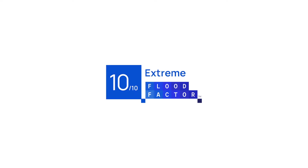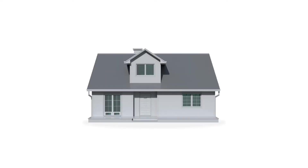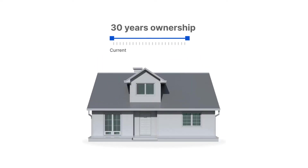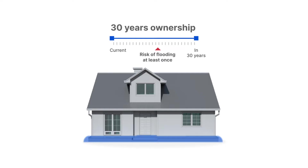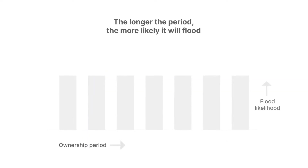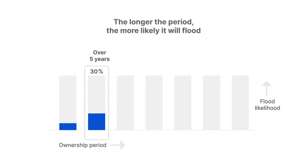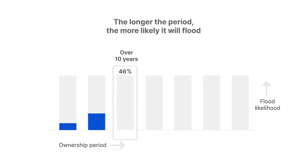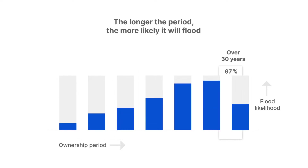Put simply, a Flood Factor is a 1 to 10 scoring from minimal to extreme that tells you a property's potential risk of flooding at least once over the life of a 30-year mortgage. Flood Factor aggregates how risks are accumulating and changing over time, which means even very small chances of flooding today can add up to bigger chances over time.